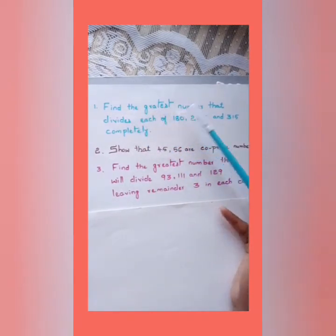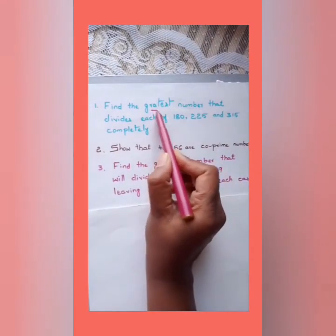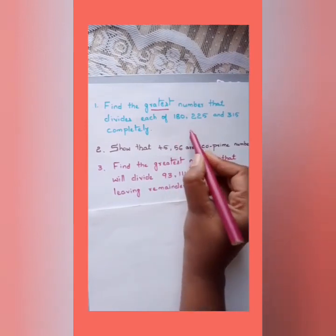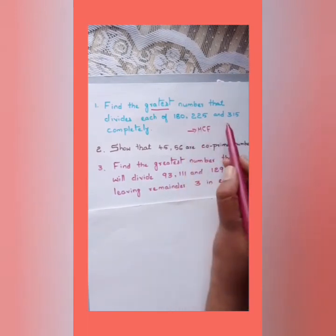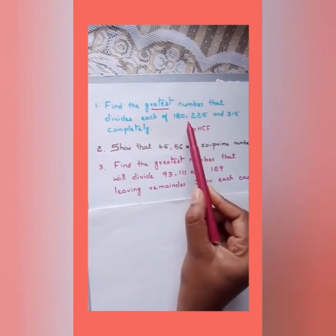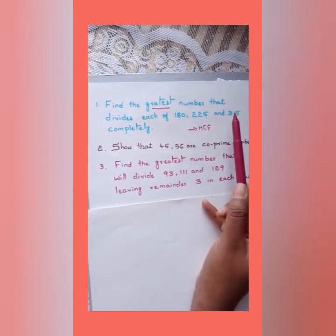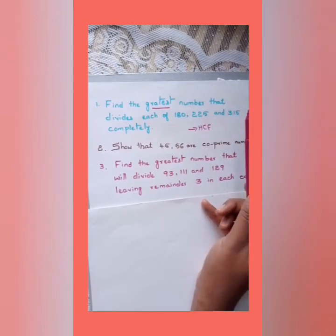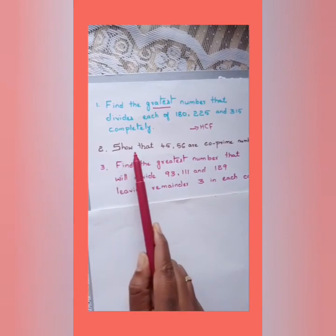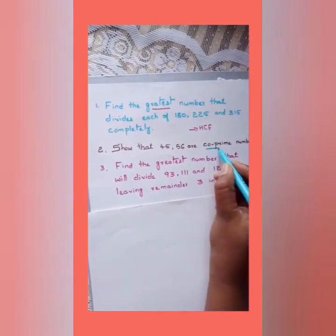When you see the word 'greatest,' it indicates you need to calculate the HCF of the given numbers. You can solve it using the division method, common factor method, or prime factor method. Another type of question might ask you to show that two numbers, like 45 and 56, are co-prime numbers — this also requires calculating the HCF.